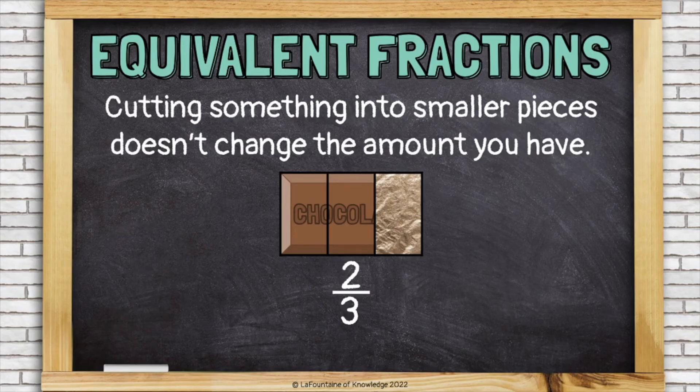Here I have two-thirds of a chocolate bar, because this whole chocolate bar was cut into three equal pieces and I have two of them left. If I cut those pieces, now I can see that the chocolate bar had been cut into six total pieces, and I have four of them — four-sixths. But it's the same amount of chocolate.